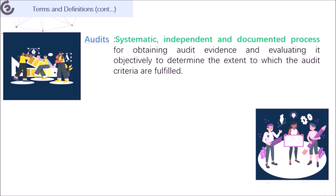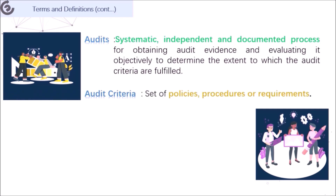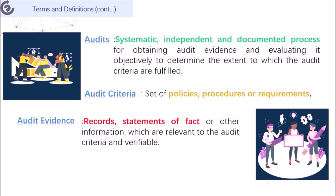We've mentioned auditors many times. But what is the accurate definition of those terms such as audits, auditors, and competence? Based on environmental auditing information, an audit means a systematic, independent, and documented process for obtaining audit evidence and evaluating it objectively to determine the extent to which the audit criteria are fulfilled. The audit criteria indicate a set of policies, procedures, or requirements. Audit evidence refers to records, statements of fact, or other information which are relevant to the audit criteria and verifiable.